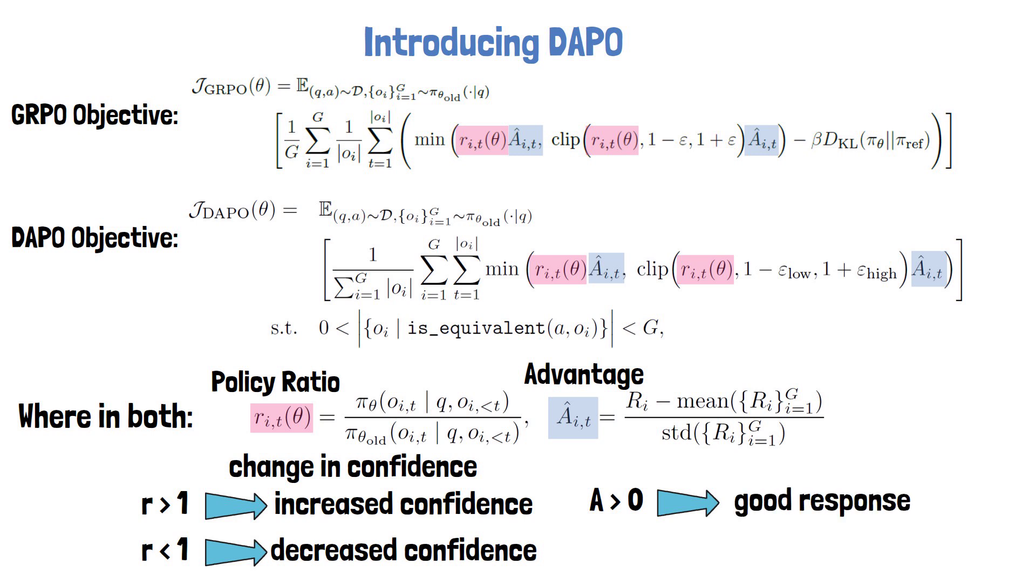Multiplying the policy ratio by a positive number encourages the model towards preferred responses. If the advantage is negative, the response is worse than the average. Multiplying the policy ratio by a negative number encourages the model away from poor responses. We'll continue to look at parts of the objectives as we talk about changes in DAPO comparing to GRPO, but now let's review the first technique that DAPO suggests called Clip-Higher.